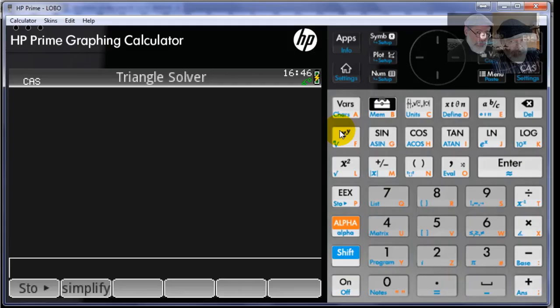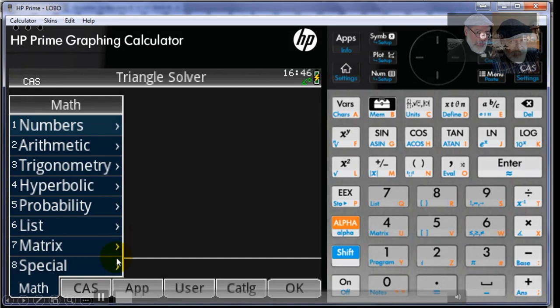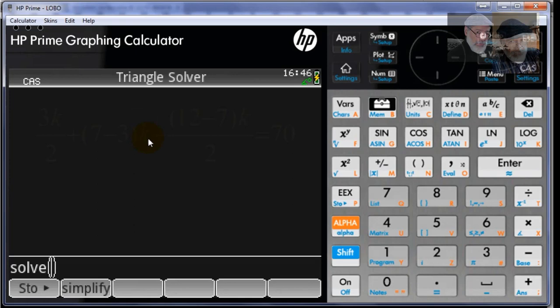Let's solve that equation. We do that in CAS mode. You see that CAS up there? Let's begin. We go to CAS solve and use the solve function. We could also type solve. In parentheses, we write the equation we want to solve.